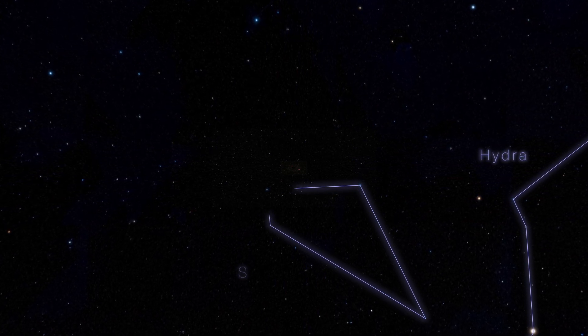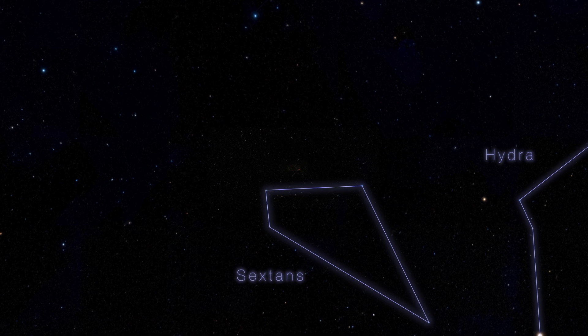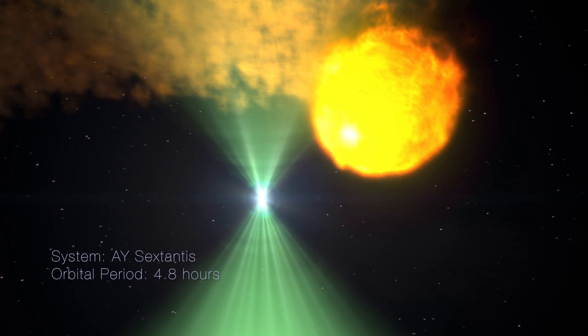About 4,400 light-years away, in the constellation Sextans, there is an extraordinary binary system that pairs a rapidly spinning neutron star, or pulsar, with a star about one-fifth the mass of the Sun.